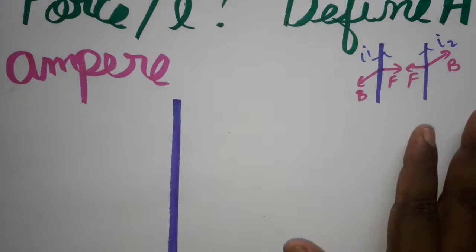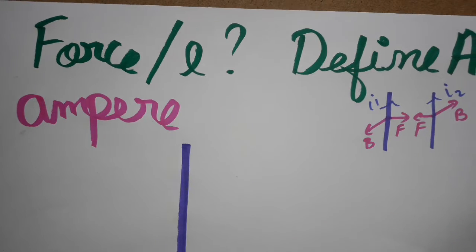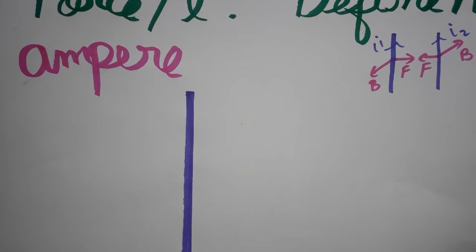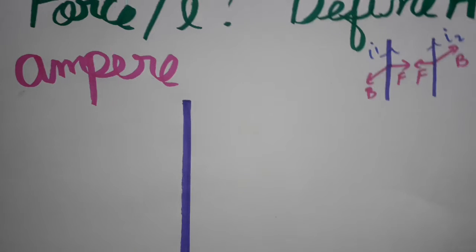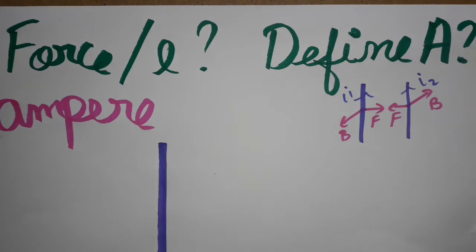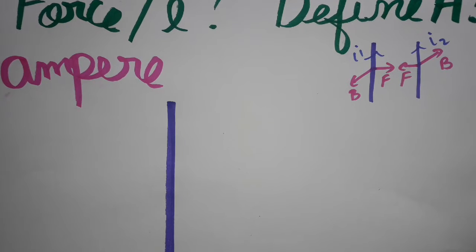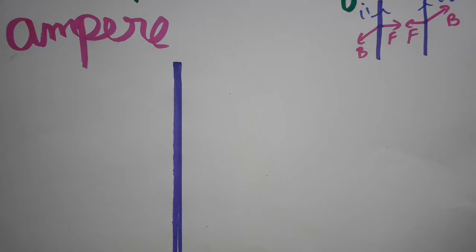Hello students, today we are going to see what is force per unit length and also define Ampere. To define Ampere, they usually use the force per unit length. First we should know what magnetic field is produced around a straight current-carrying conductor, then only we can understand how Ampere is defined.